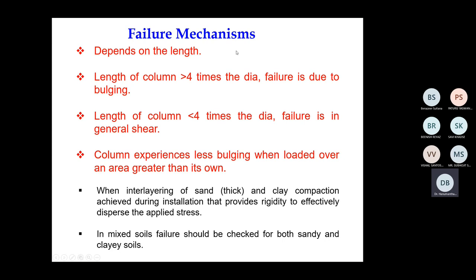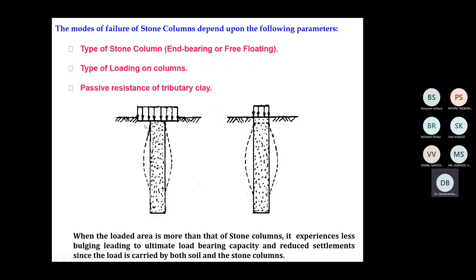The failure mechanism strongly depends on the length of the stone column. Based on extensive experimental investigations: if the length of the column is greater than four times the diameter (4D), failure is due to bulging. If the length is less than 4D, failure is general shear. Columns experience less bulging when loaded over an area greater than their own diameter. There is also a distinction between load confined to the column diameter and load spread outside.